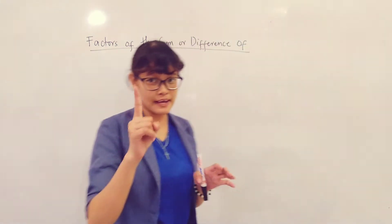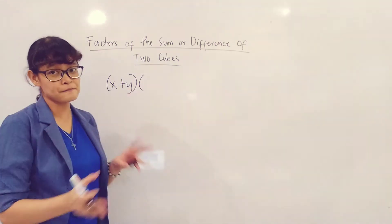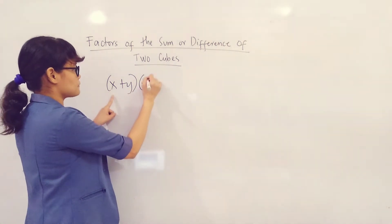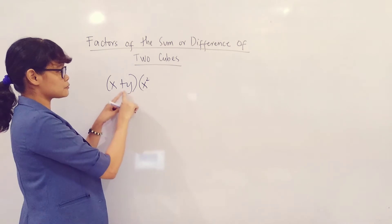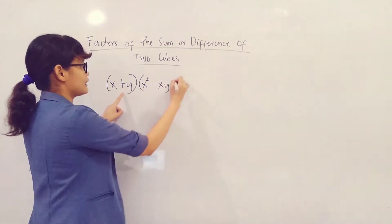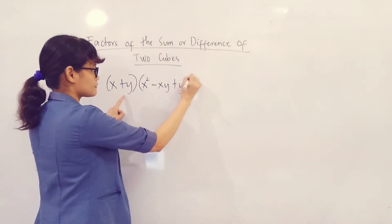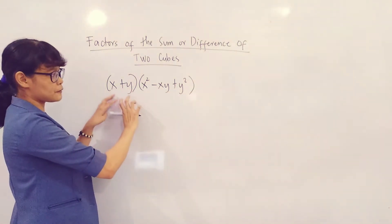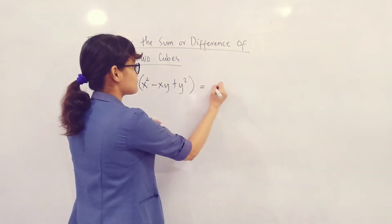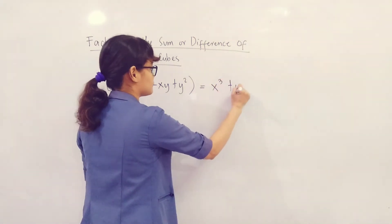Whenever we multiply this one, we have a binomial factor and a trinomial factor obtained by squaring the first term, then the product with the opposite sign, minus xy, and then plus the square of the last term. Multiplying this binomial factor and this trinomial factor gives us a product equal to the sum of two cubes.